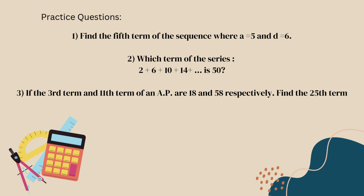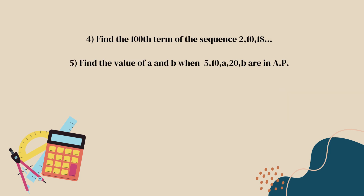We need to practice a few questions. You can find the fifth term of the sequence, and also determine which term of the series equals 50. If the third term and the 11th term of an AP are 18 and 58 respectively, find the 25th term. For the 11th term, write a plus 10d equals 58. For the third term, write a plus 2d equals 18. You can solve the system from there.